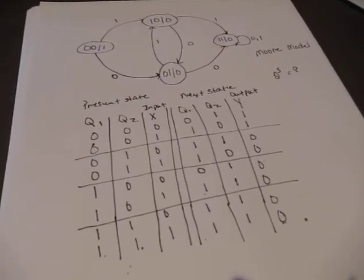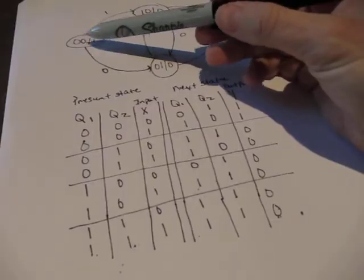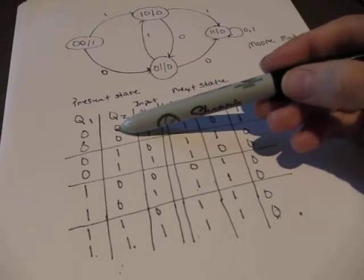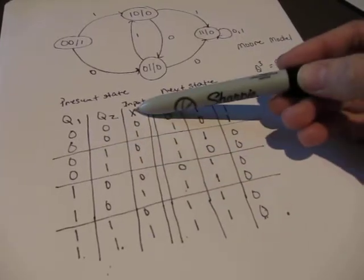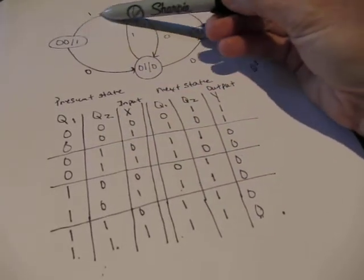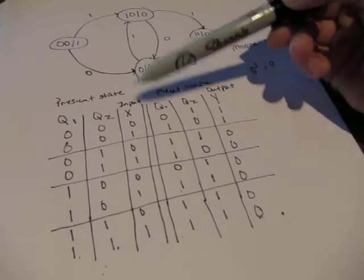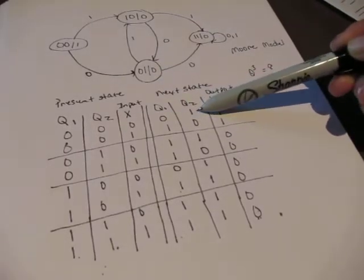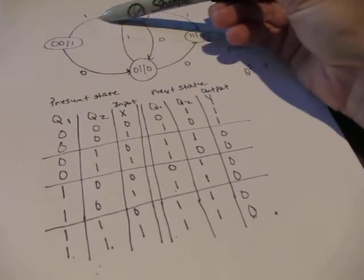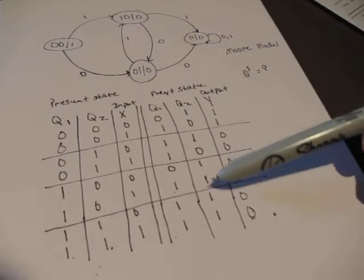So again, how I came up with those in the Moore diagram: the outputs are inside the circle with the state. So state 00 output is 1, state 01 output is 1. The next state values come from the arrows going out. An output of x=0 goes to state 01; an output of x=1 goes to state 10, and so forth for all of them.